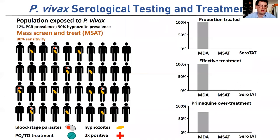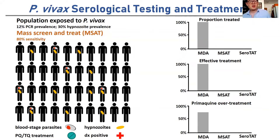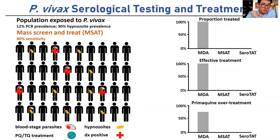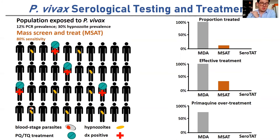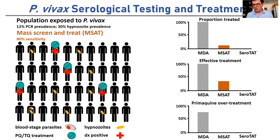Another strategy is mass screen and treat, where we use a blood stage diagnostic. Individuals with hypnozoites in the liver will also have some blood stage parasites that are easy to detect with a rapid diagnostic test. This identifies most individuals with blood stage parasites, who can then be targeted for treatment. But the challenge is this completely misses all individuals with liver stage parasites that are undetectable with these tests — so it's a very safe method but not very effective.